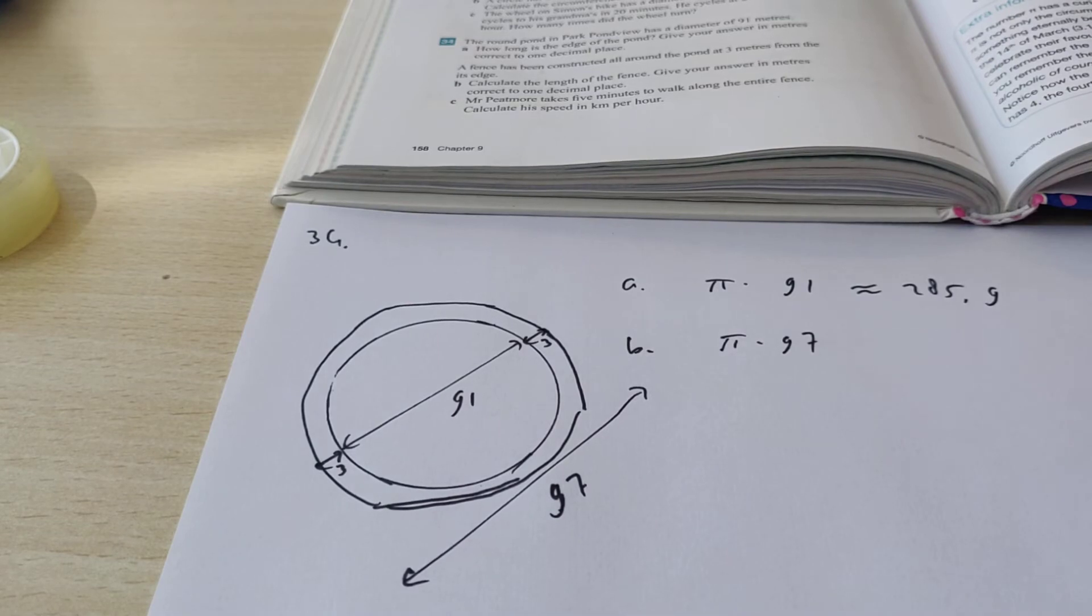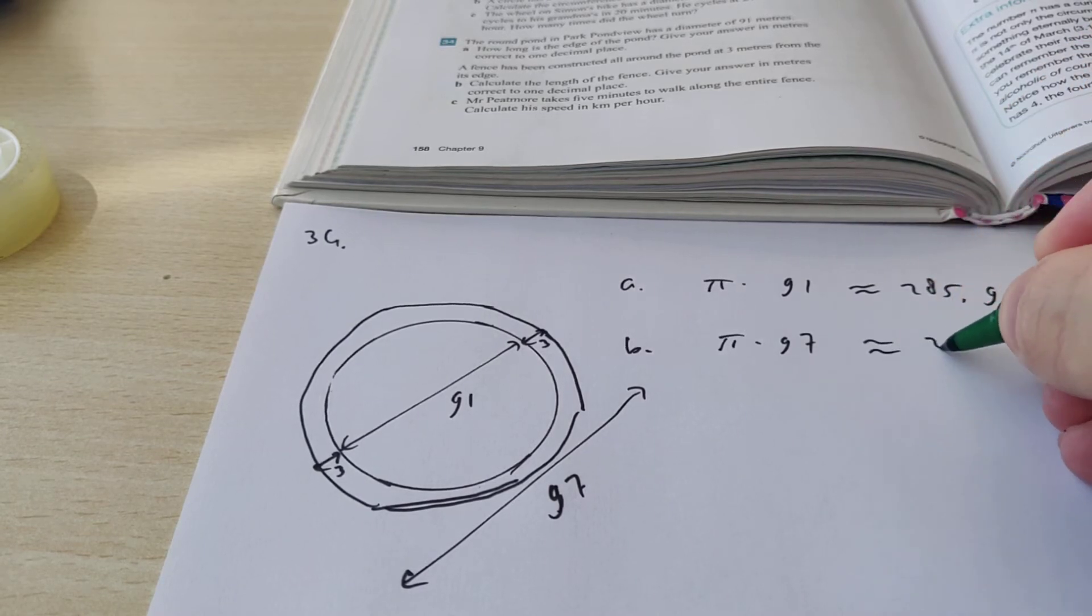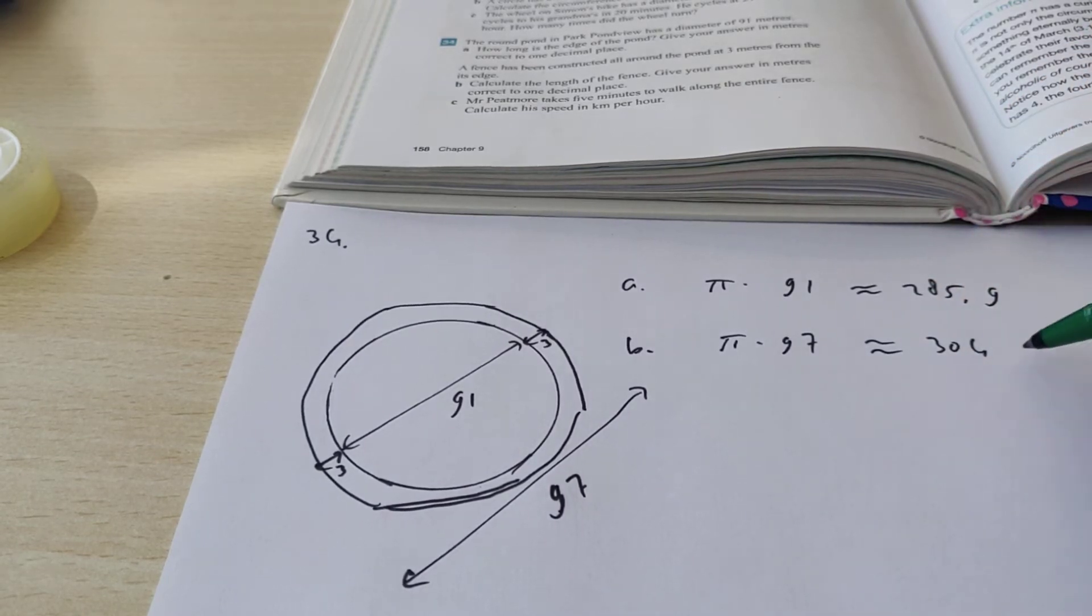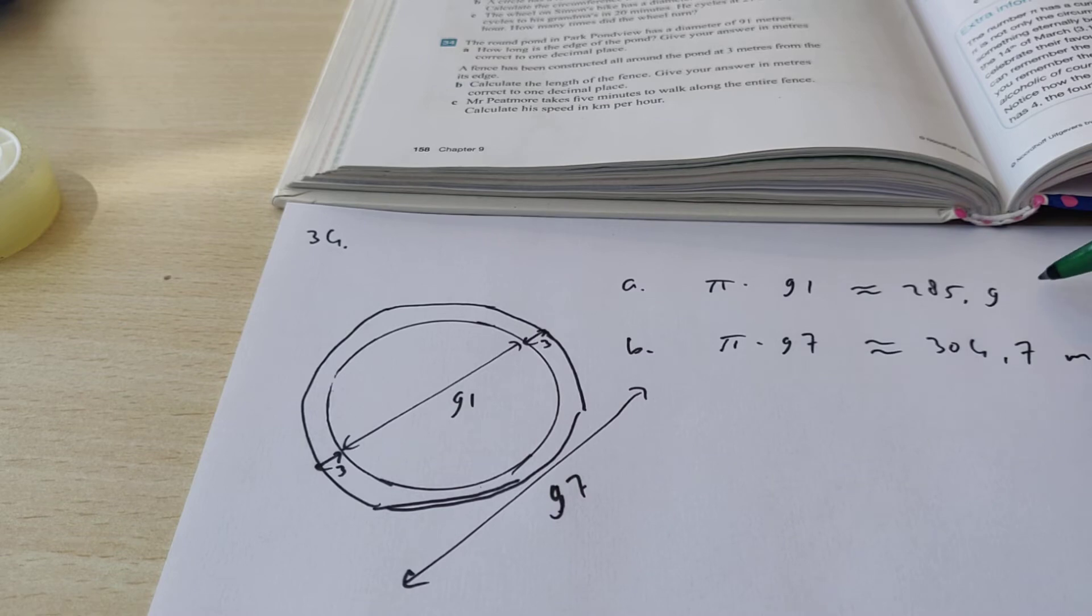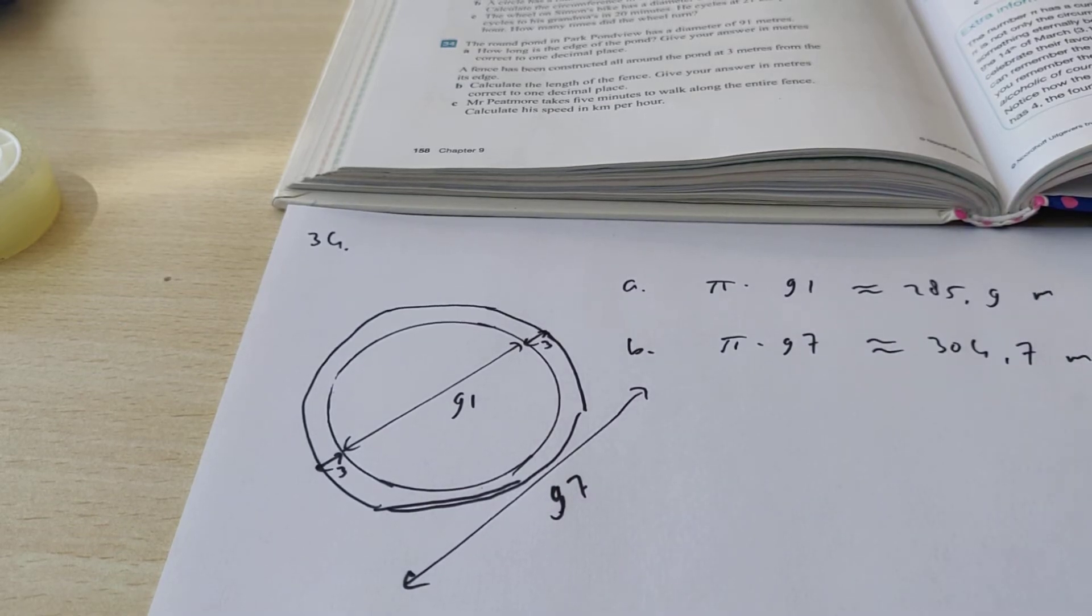Let me calculate what π times 97 is. That is 304.7 meters. So that's exercise B.